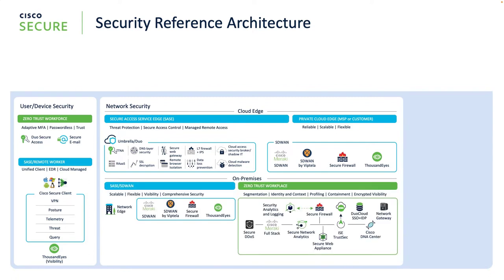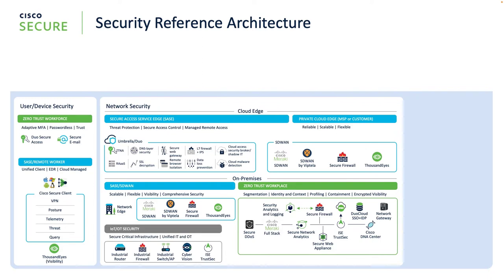Now let's get to the on-premise part. From a zero-trust standpoint, we talk about having a secure workplace. ISE enables segmentation in your workplace so that there's specific context about all the data flowing through your network — we're able to tag devices, users, or flows so we can identify what each flow is. For the IoT and OT space, we've had industrial routers and firewalls in place for many years, but with Cyber Vision it provides more visibility into machines. If something is behaving out of norm, we get that visibility and protection powered by Cyber Vision.